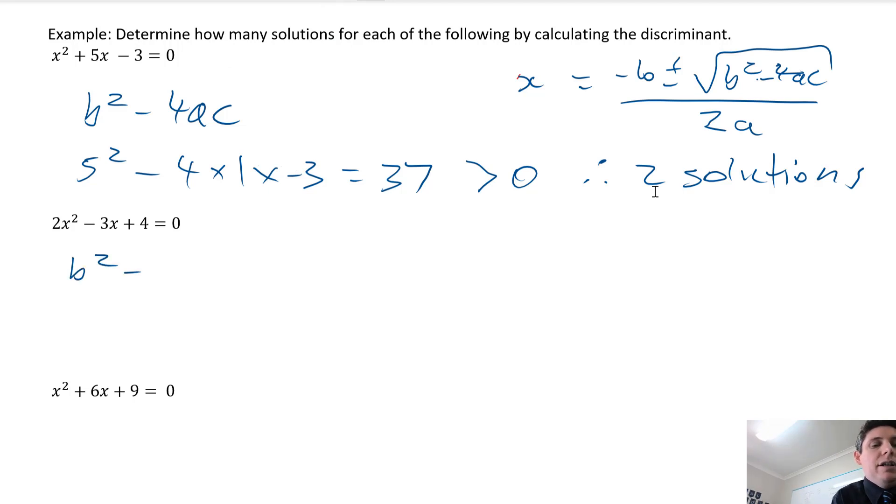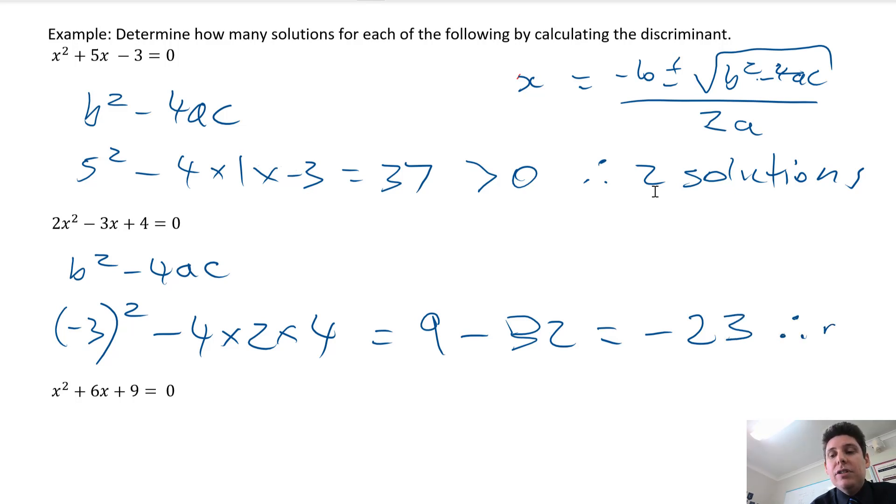So the next one, b squared minus 4ac. What's the b number? What's the a number? What's the c number? So we got 9 minus, what's that? 32. So the discriminant is negative 23. So it's negative, so there's no solutions.